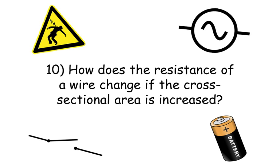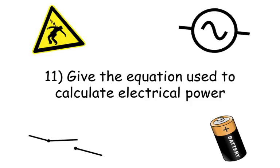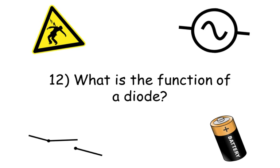Number ten: how does the resistance of a wire change if the cross-sectional area is increased? Question eleven: give the equation used to calculate electrical power. Question twelve: what is the function of a diode?